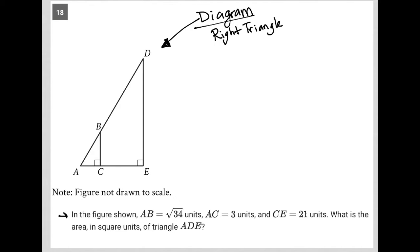So the question says in the figure shown, AB equals square root 34 units. I'm going to actually label it. Because you'll be taking this exam on a screen, you'll have scratch paper. I would suggest, first of actually, let's go through this. It's pretty good.